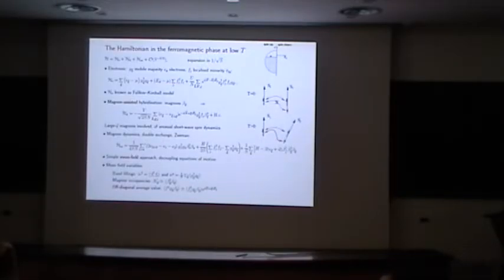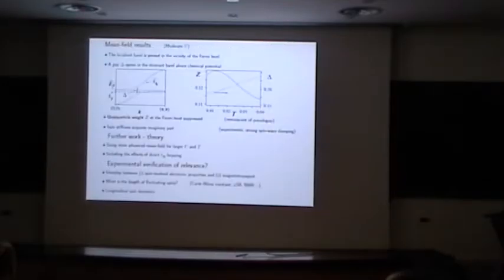For the beginning, I did a simple mean field treatment in terms of these average values. Notice the presence of diagonal average value. And these are qualitative results which are obtained from moderate U. This mean field, this particular mean field is not stable at large U. I have to do better.